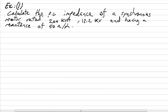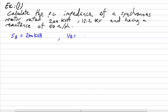Now I will solve some examples on the per unit system. This is example number one: how to calculate the per unit impedance of a synchronous motor rated 200 kVA and 13.2 kV, having a reactance of 50 ohm per phase. The rating of the machine — 200 kVA and 13.2 kV — is considered as the base value. Thus, S base equals 200 kVA and the voltage base equals 13.2 kV. These are the base quantities.